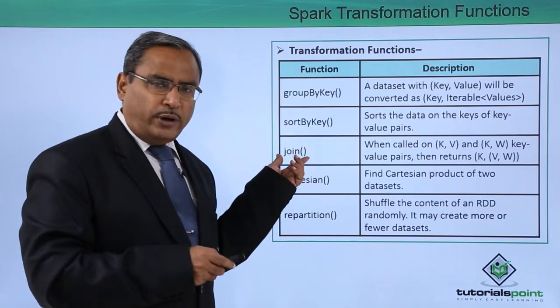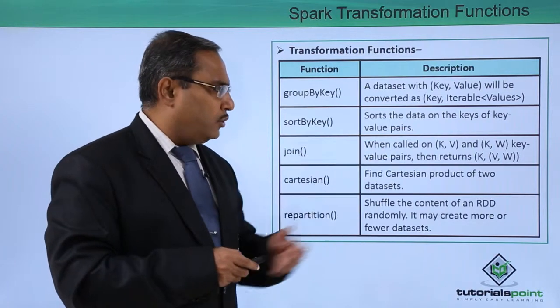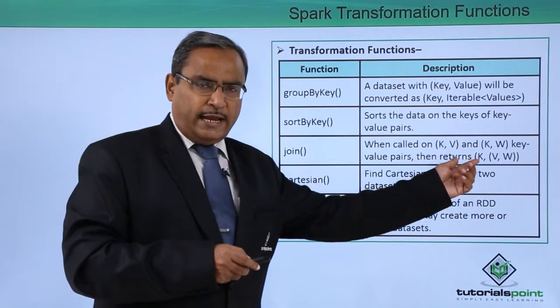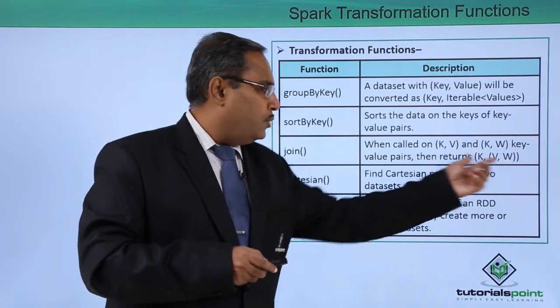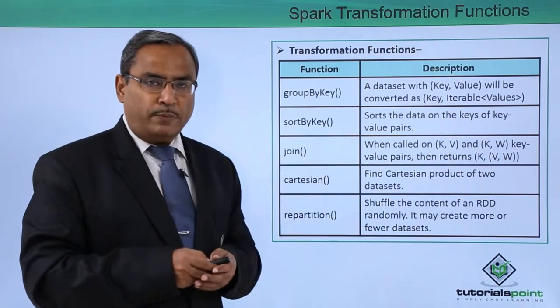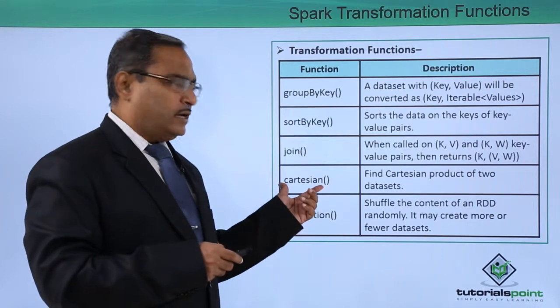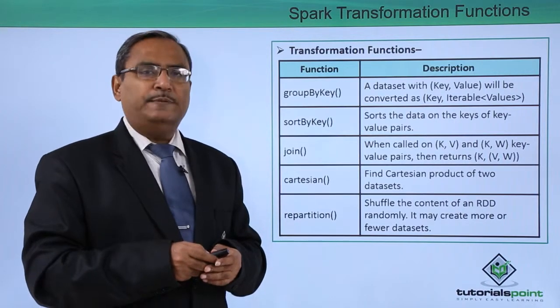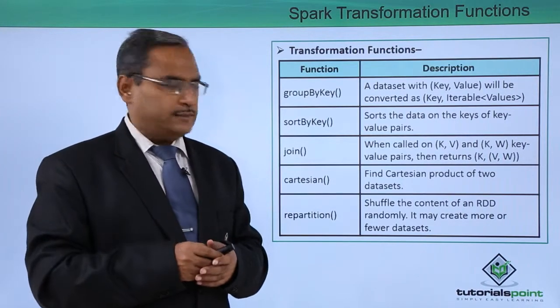Next one is the join function and when called on KV and KW key value pairs, it returns KV and that is known as the join operation. Next one is the cartesian. Find cartesian product of two datasets, that means all possible combinations of two datasets.